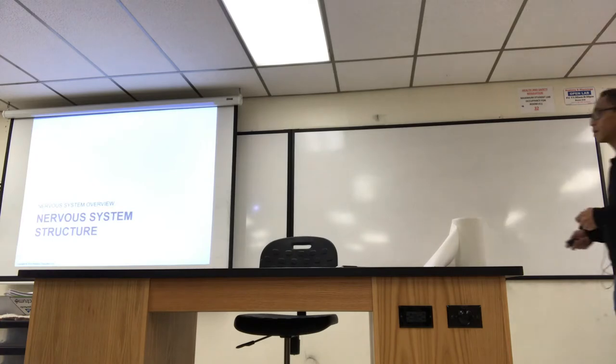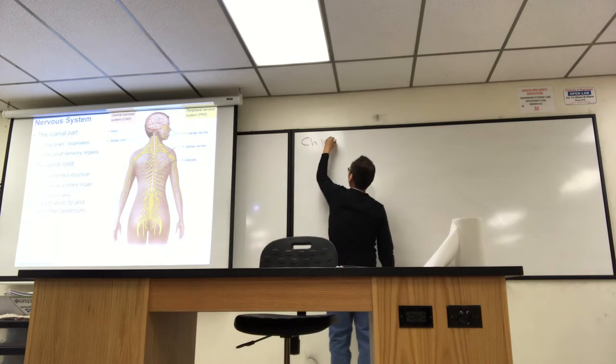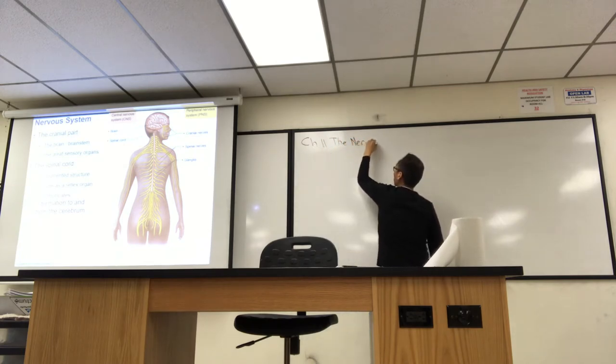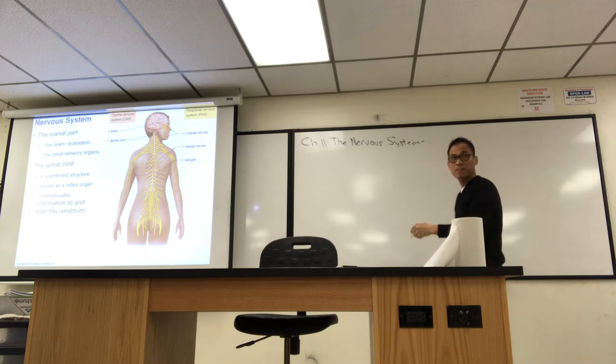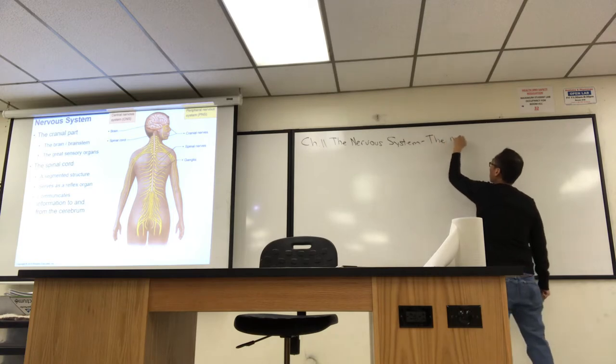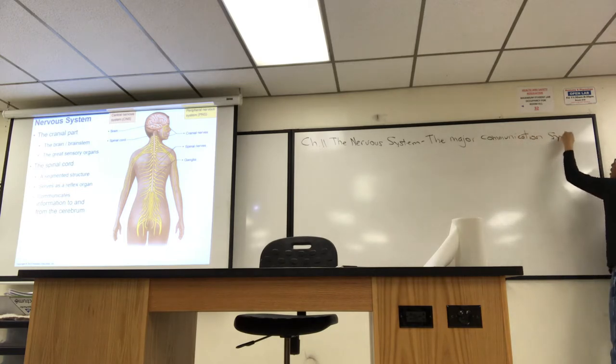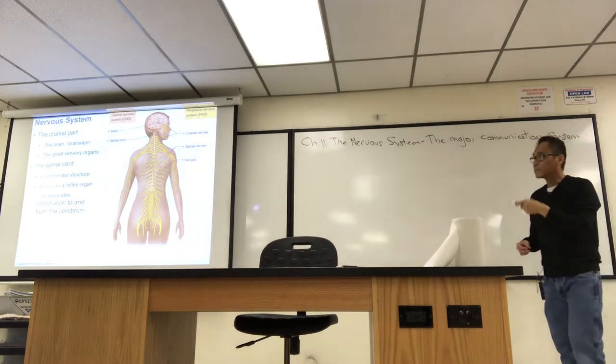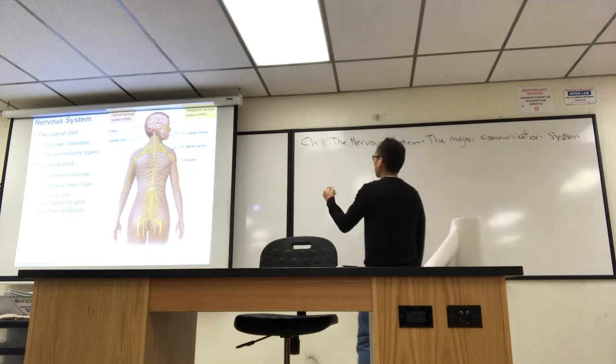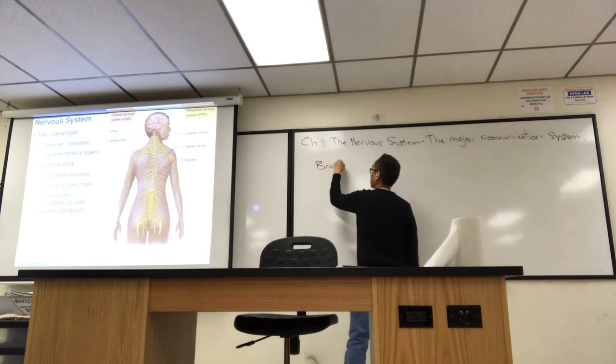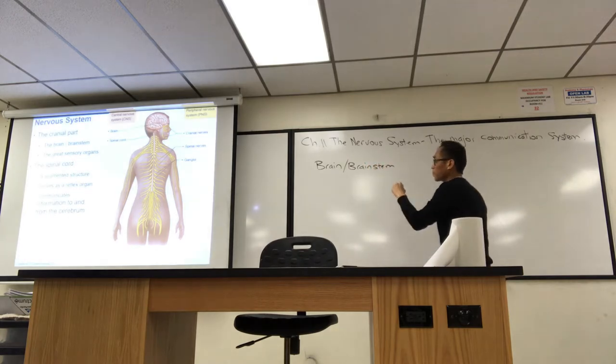Let's start with the structure. Chapter 11, the nervous system. This is the major communication system of the body. Here's the functional anatomy. They call it the cranial part and the spinal cord. So basically, the cranial part is the brain and brain stem along with the spinal cord.